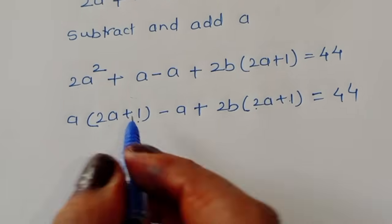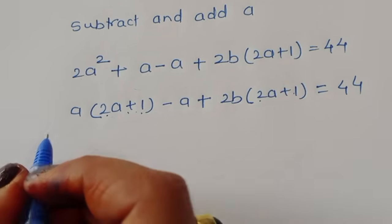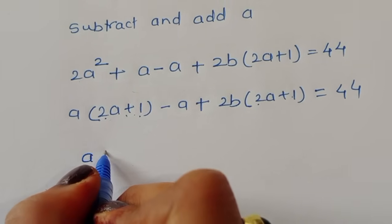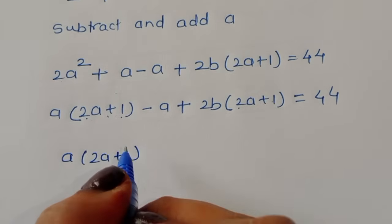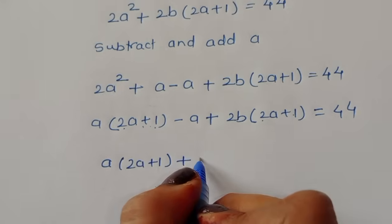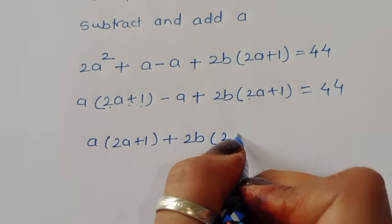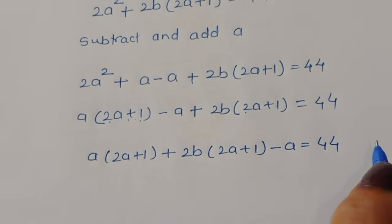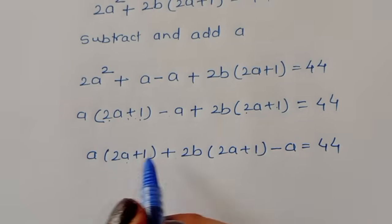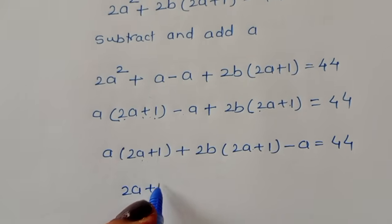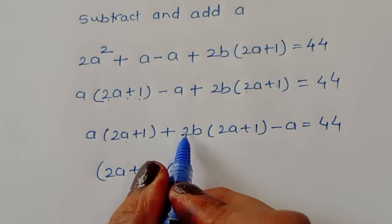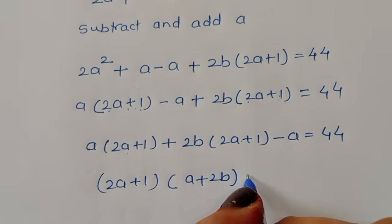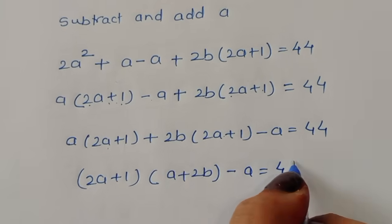We can see why we added and subtracted a — it creates the common factor (2a + 1). Taking (2a + 1) common: (2a + 1)(a + 2b) − a = 44.